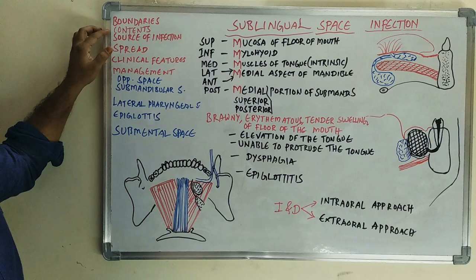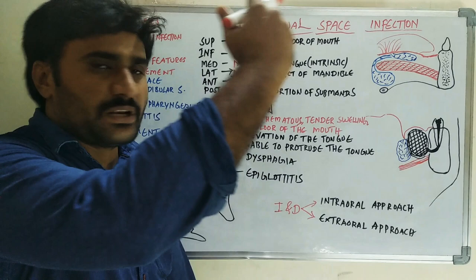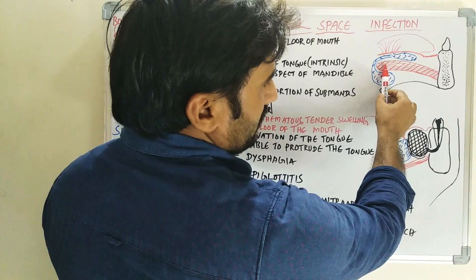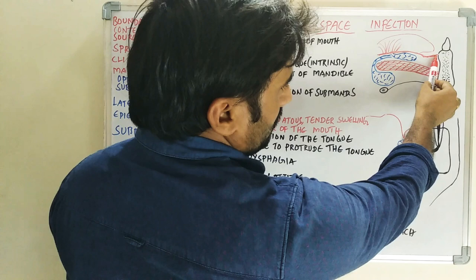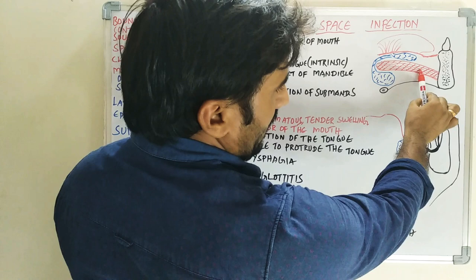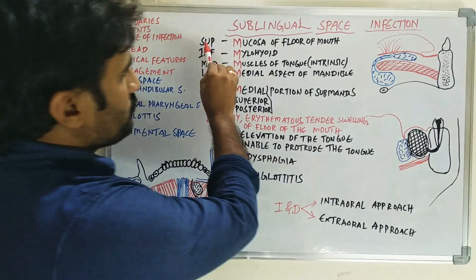In this video we will discuss sublingual space infection — covering boundaries, contents, source of infection, spread, clinical features, and management. The muscle that differentiates the sublingual space from the submandibular space is the mylohyoid muscle. In this diagram, the black structure is the mandible, the red one is the mylohyoid muscle, and the space between the mylohyoid muscle and the floor of the mouth mucosa is the sublingual space.